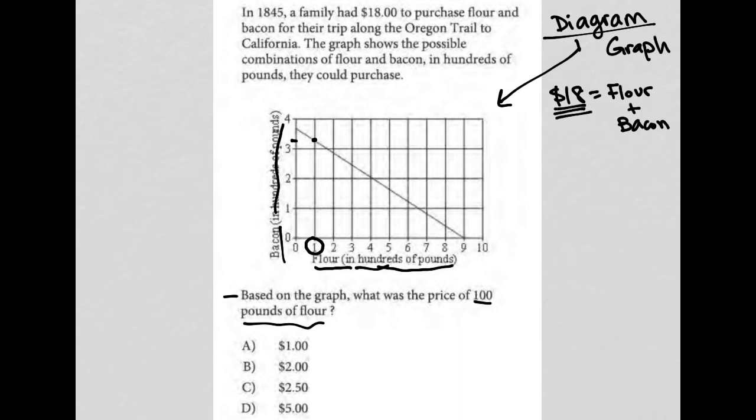The point on this graph that matters most is this point right here. That point right there, the x-intercept, basically says if the family were to buy 900 pounds of flour and no bacon, zero pounds bacon. That's what it means for that point to be on the x-axis.